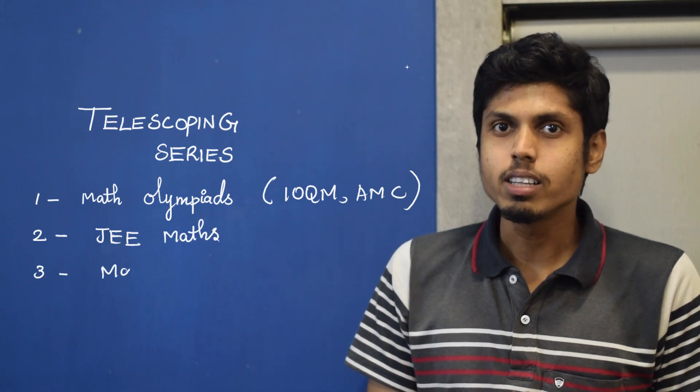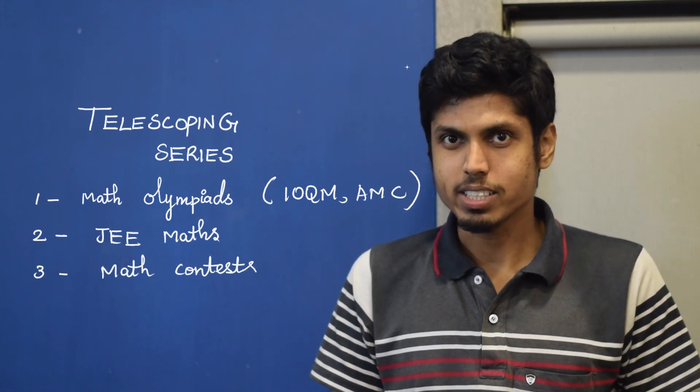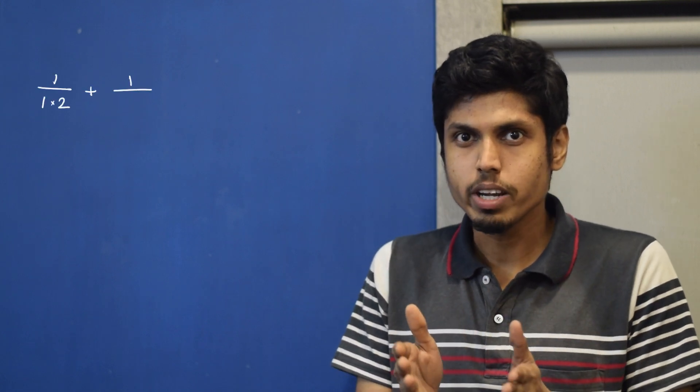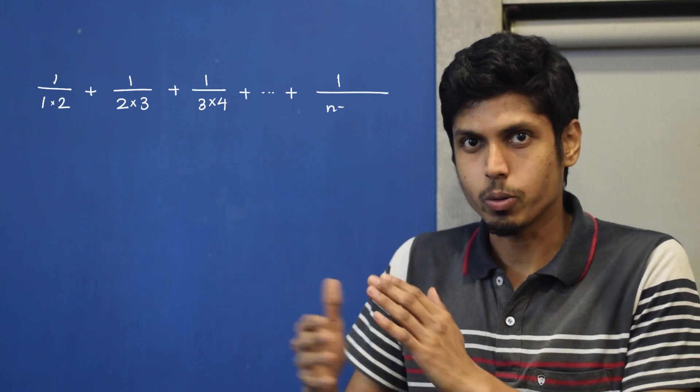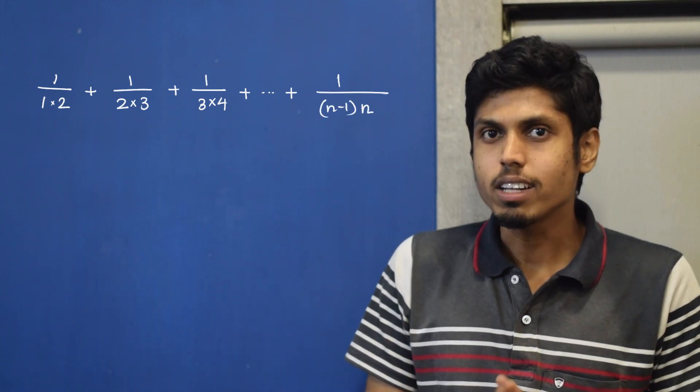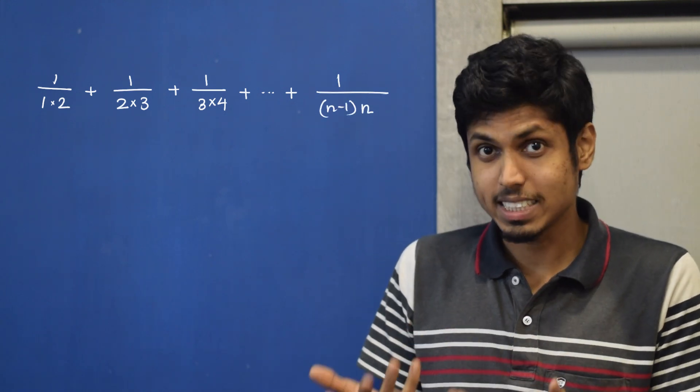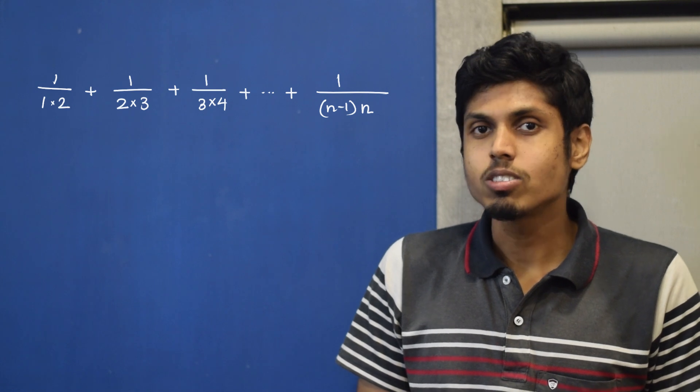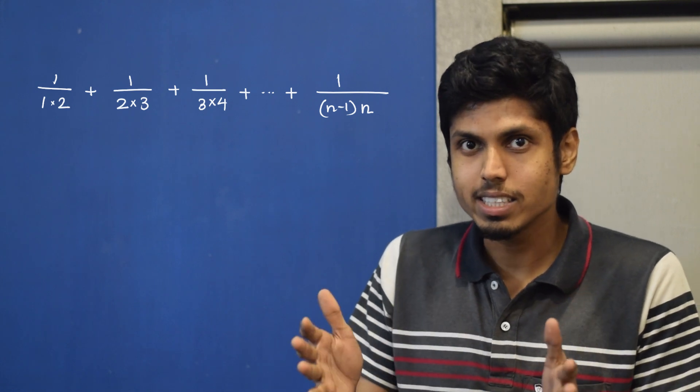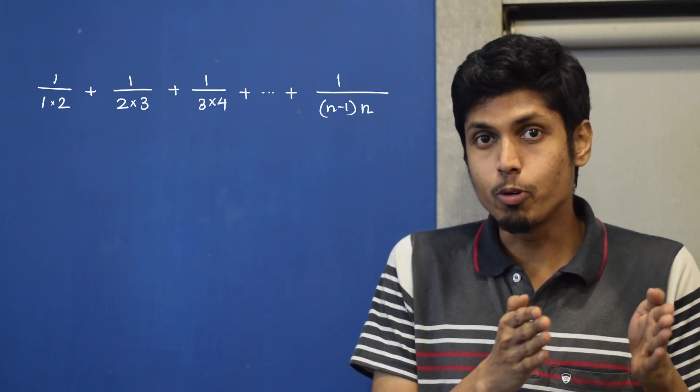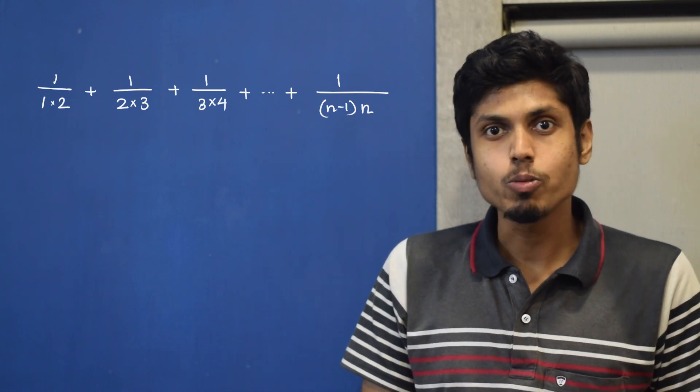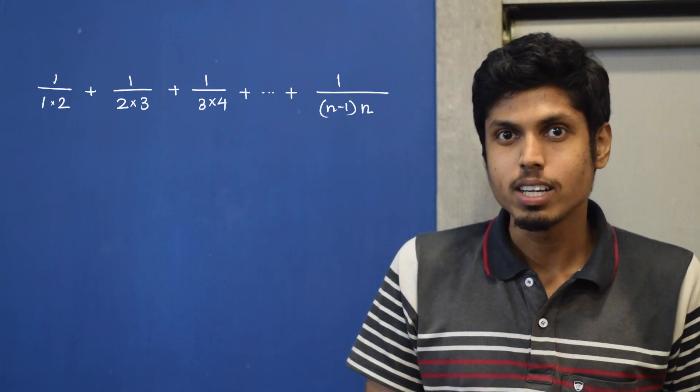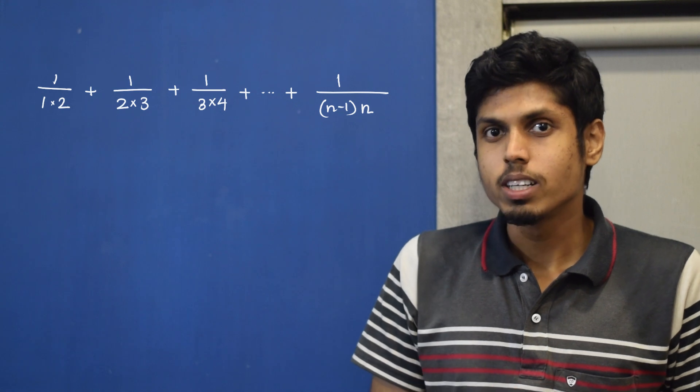Let's take an example to understand this. Consider 1 by 1 into 2 plus 1 by 2 into 3 and so on till 1 by n minus 1 into n. If I want to find the sum of this series, it is not a direct LCM or a brute force way. We have to use some trick and telescoping series is the one.